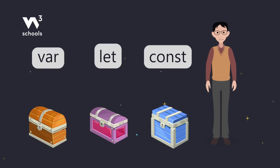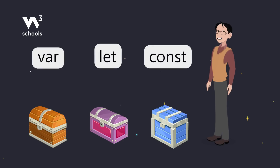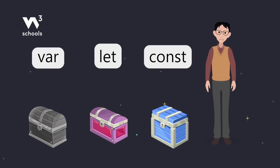Var, let, and const. Var is the oldest method, but we rarely use it today unless we're writing code for really old browsers. Instead, use let for values that change and const for values that don't.